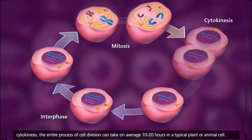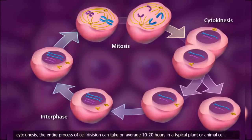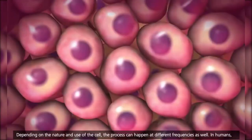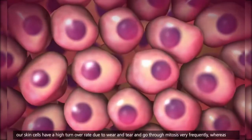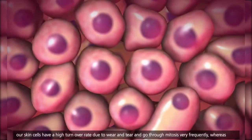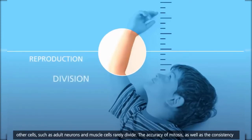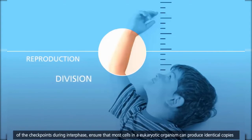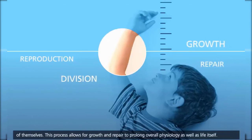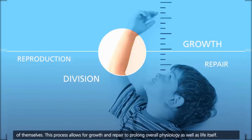From interphase to cytokinesis, the entire process of cell division can take on average 10 to 20 hours in a typical plant or animal cell. Depending on the nature and use of the cell, the process can happen at different frequencies. In humans, skin cells have a high turnover rate and go through mitosis very frequently, whereas other cells such as adult neurons and muscle cells rarely divide. The accuracy of mitosis and the consistency of interphase checkpoints ensure that most cells in a eukaryotic organism can produce identical copies of themselves.